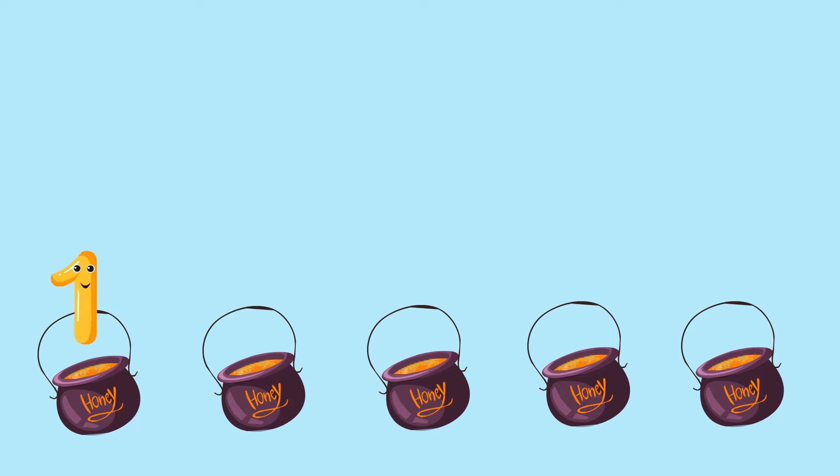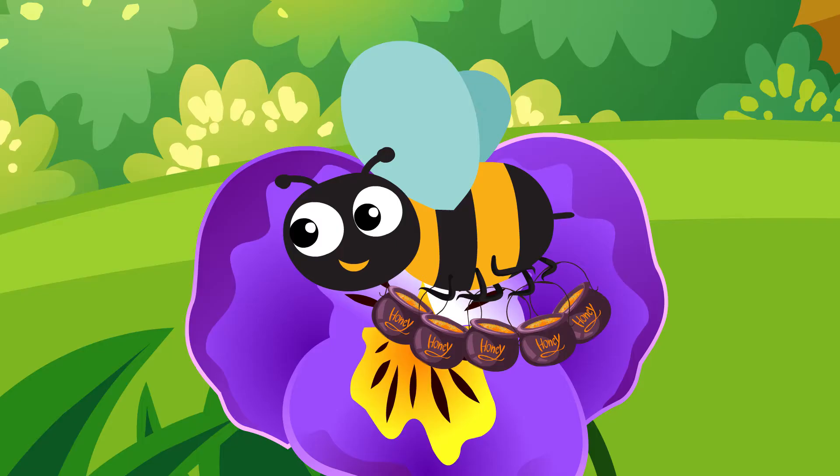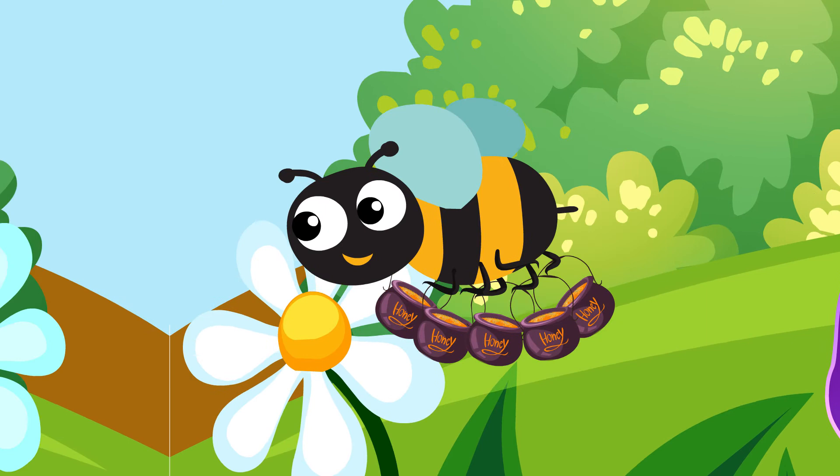1, 2, 3, 4, 5. 1, 2, 3, 4, 5. Now the bee has five buckets of honey.